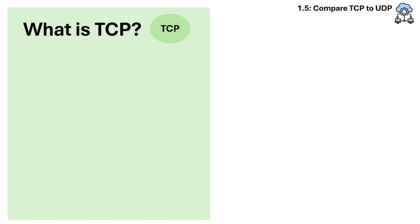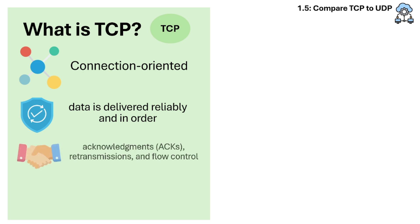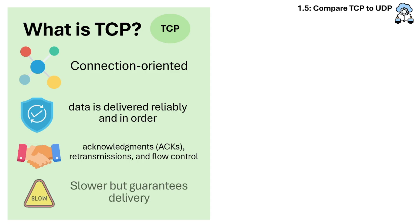Let's talk about TCP first. TCP is a connection-oriented protocol. It ensures data is delivered reliably and in order. It also includes features like acknowledgements, retransmissions, and flow control. It is slower due to extra overhead but guarantees delivery.